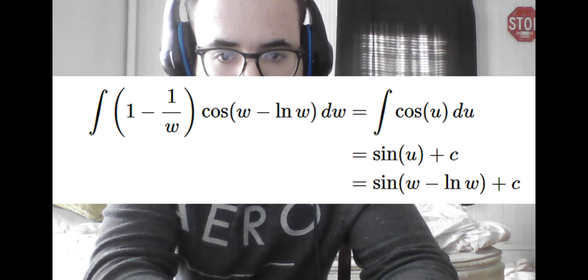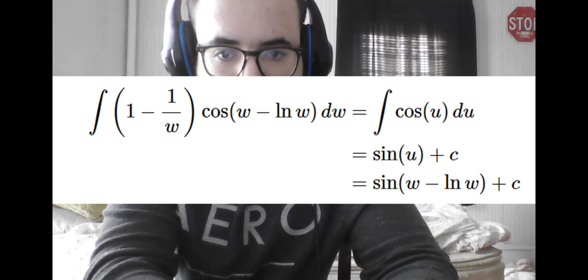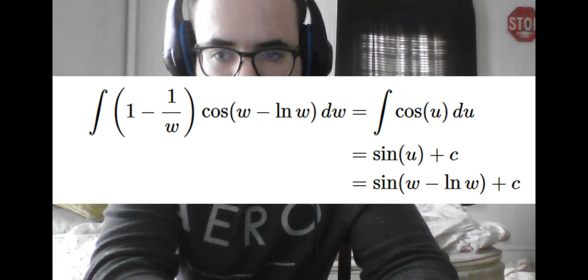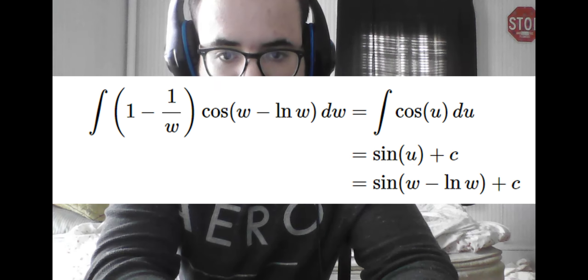So now it is a simple integral we know how to do, cosine of u, and integrate with respect to u. And we plug back in w minus ln of w for u.